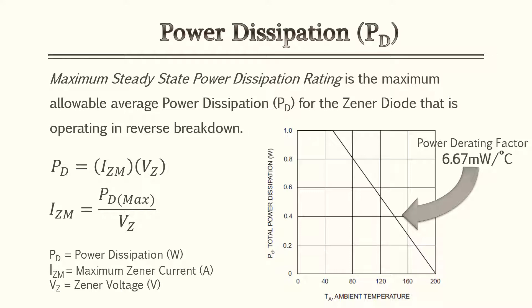There are mainly two formulas to know. Power equals current times voltage — specifically the Zener diode voltage times the maximum Zener diode current. Using algebra, maximum Zener current equals power over voltage. The power derating factor is shown on datasheets, and you need to be familiar with it when calculating power dissipation in relation to temperature. We'll go over this in an example problem.